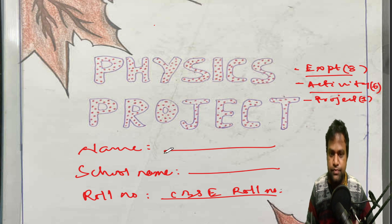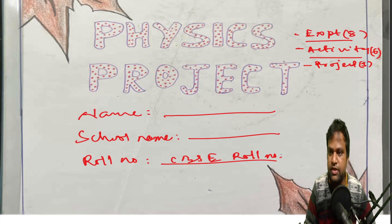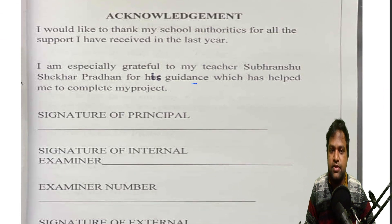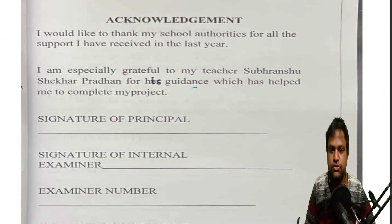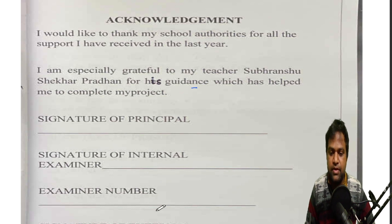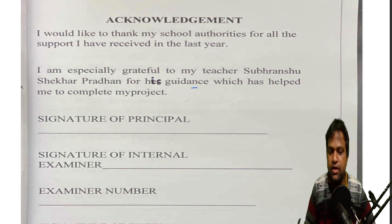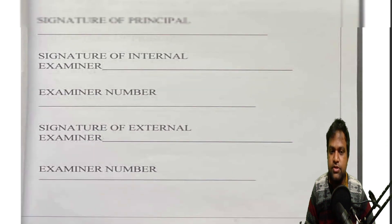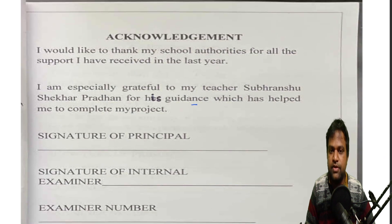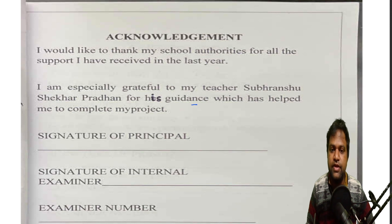On the next page, you can write the acknowledgement — whom you want to acknowledge. You can keep the signature of the principal and the signature of the internal examiner. All these things you can keep in the acknowledgement part. This will be page number two. All this you will get in the PDF — just download it.